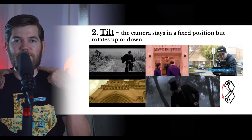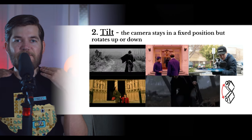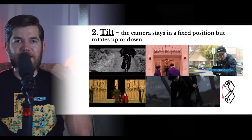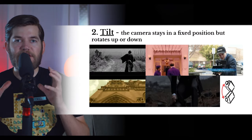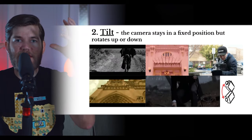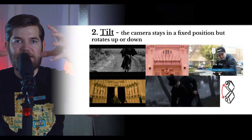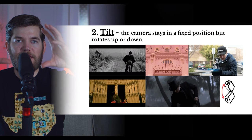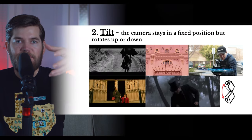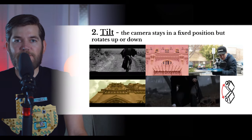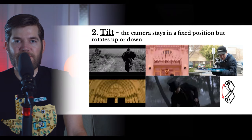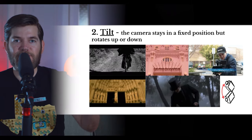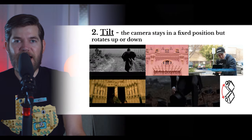Next up we have the tilt. The tilt is similar to when you turn your head to nod yes. The camera stays in a fixed position — just like your head is fixed to your neck, the camera is fixed to one spot and rotating. The camera is not physically moving; it stays in one place and turns on the axis, rotating up and down. This can be used to follow a subject or to reveal objects or follow the action of a subject.